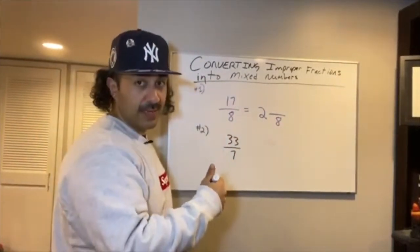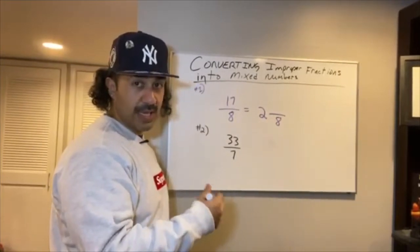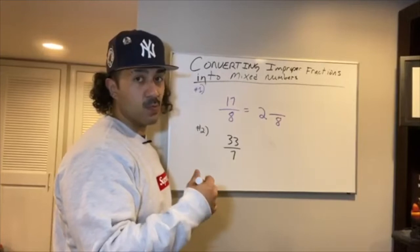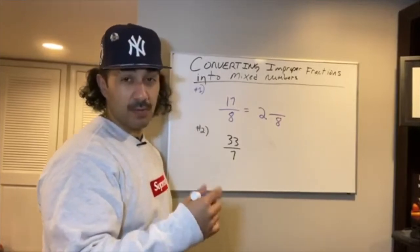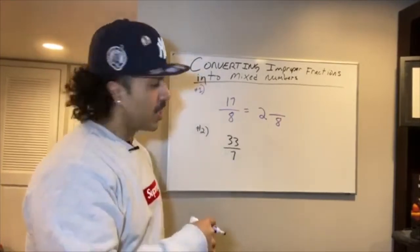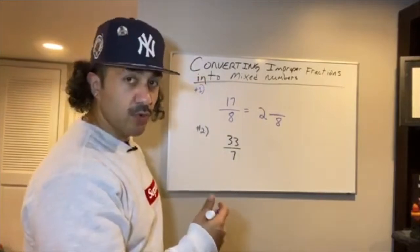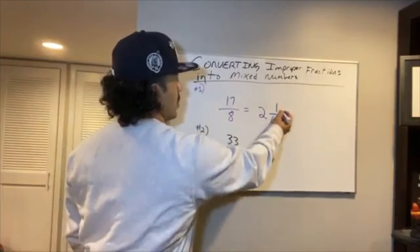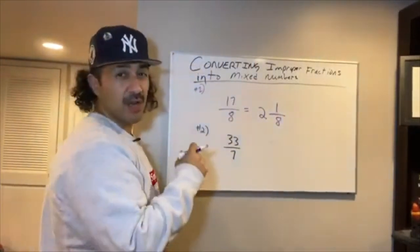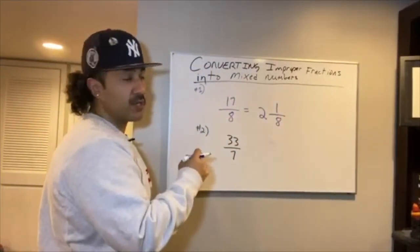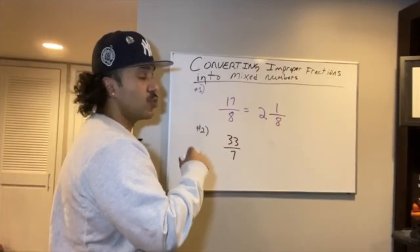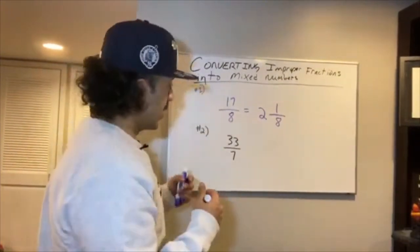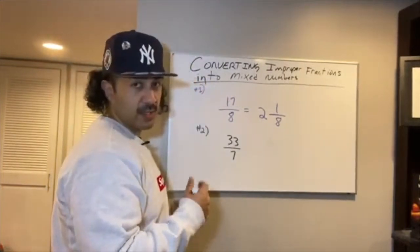However, 8 times 2 is 16, not 17. So 17 minus 16 is 1 — that's our remainder. The remainder becomes the numerator of our mixed number. So 17 eighths as an improper fraction gets converted to the mixed number 2 and 1 eighths. That's basically saying 8 goes into 17 twice and there's 1 left over.